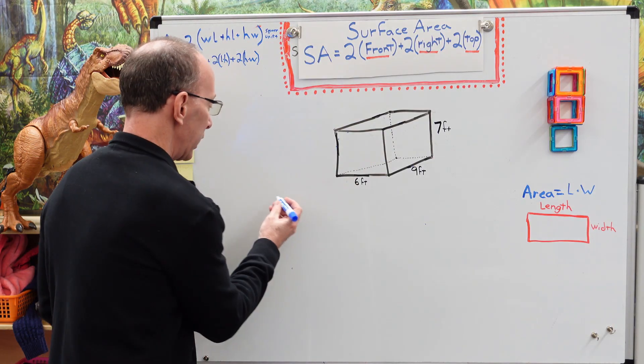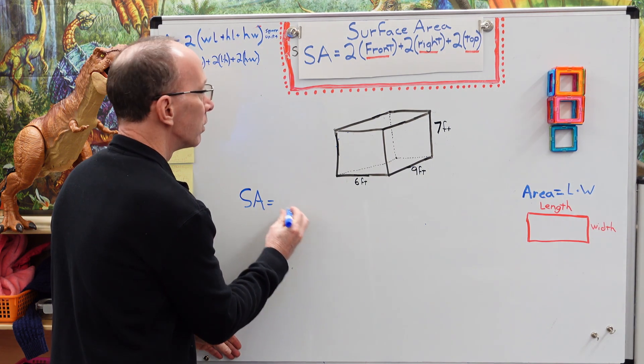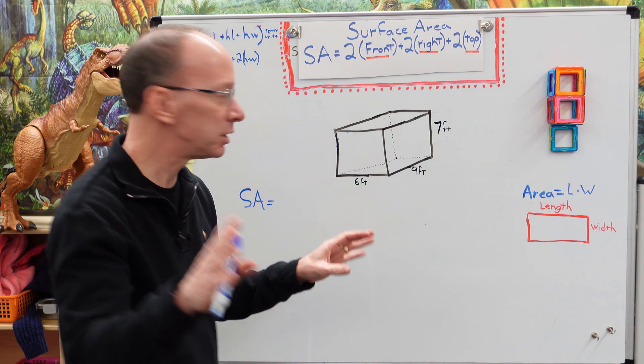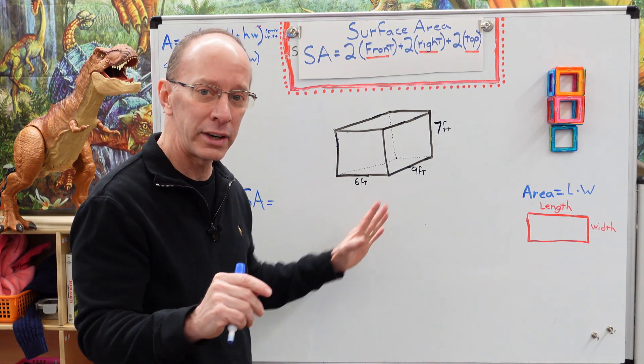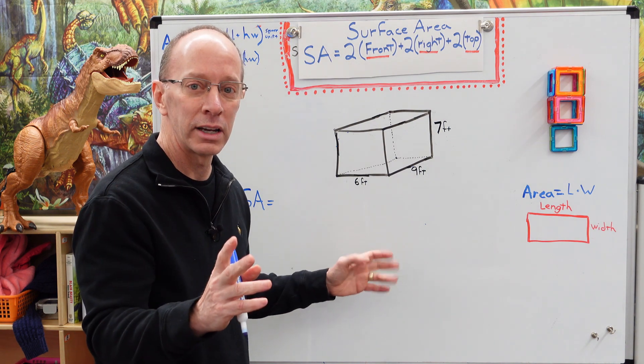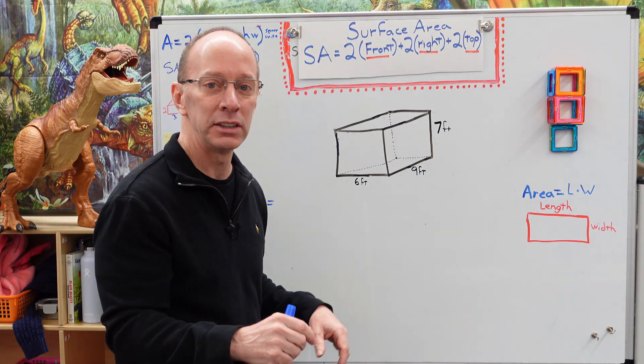So I'm going to go ahead and write SA for surface area equals. And what I want you to do right now, here is the measurements. Why don't you go ahead and freeze the video, work it out, and when you're done working that, we can kind of check that together. So go ahead and freeze the video.